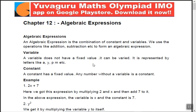Let's start the theory of algebraic expressions. An algebraic expression is a combination of constants and variables. For example, 2x plus 7: x is a variable and 7 is a constant. It can be a monomial also, as we will see. We use operations like addition and subtraction to form the algebraic expression.